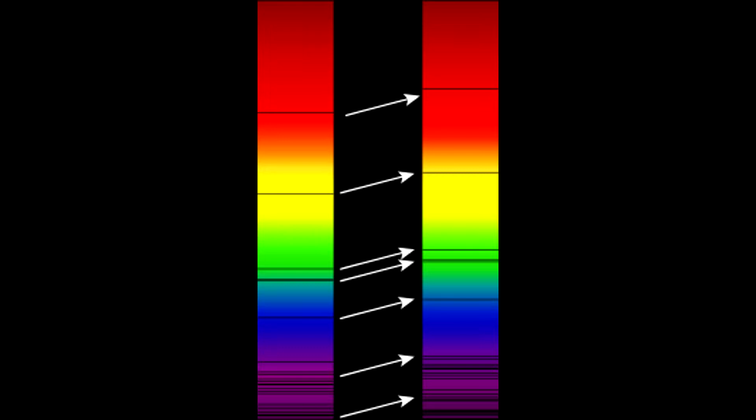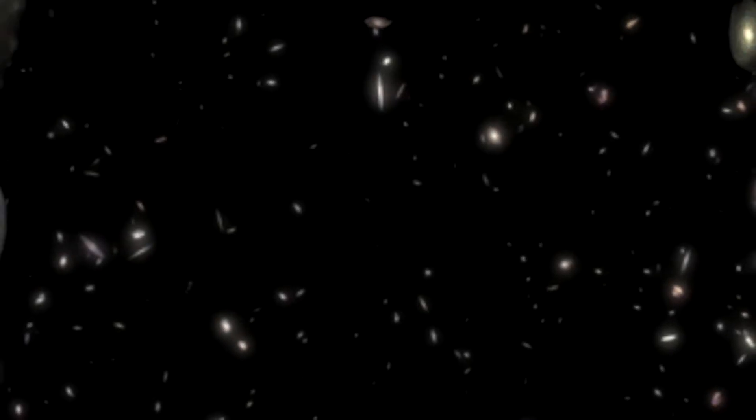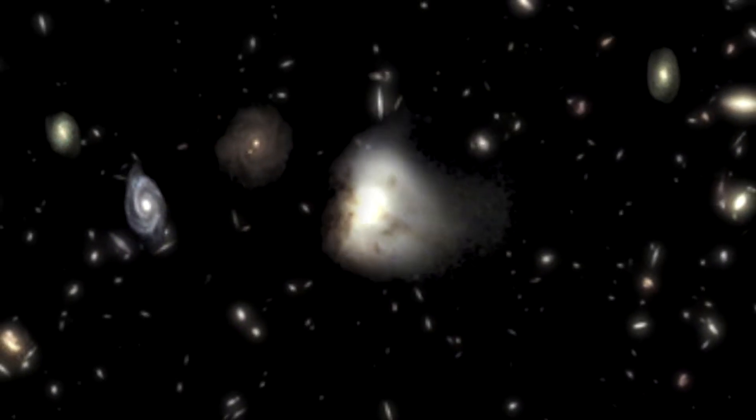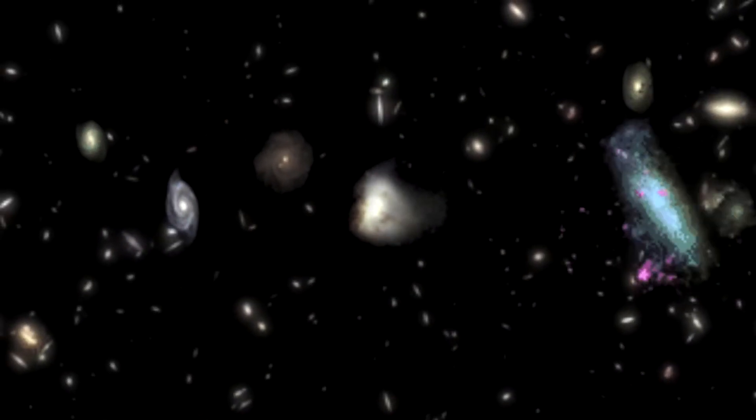The light had been redshifted, meaning that space itself is expanding, causing objects to become separated without changing their positions in space. This is known as cosmological redshift.